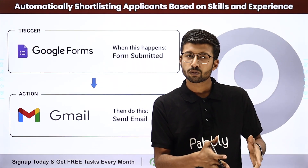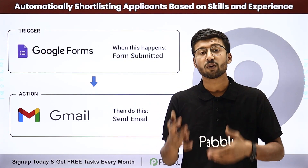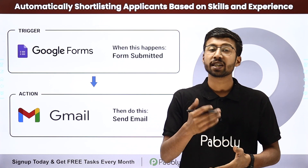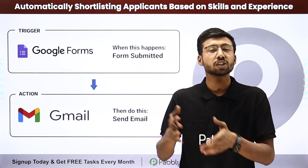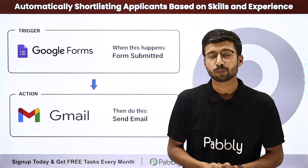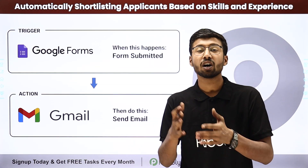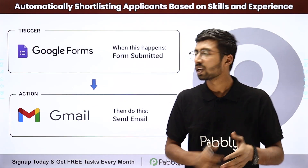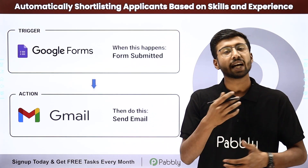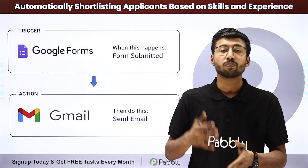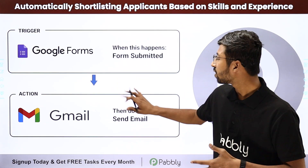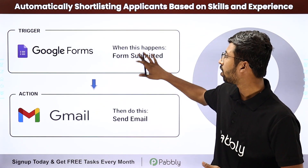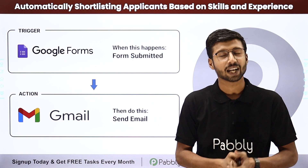Using an automation workflow, we are going to set up some conditions based on our criteria. For example, the candidates are going to enter their work experience. If you require a work experience of 5 years for a position, then candidates with less than 5 years of experience will automatically be rejected. A candidate with more than 5 years of experience will be sent a follow-up email from your Gmail account automatically. They fill the form and they get the mail according to that.